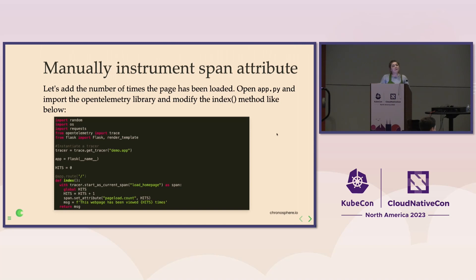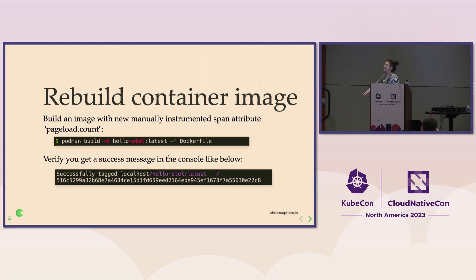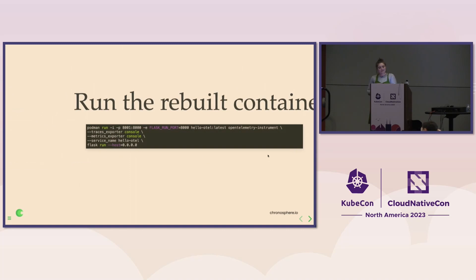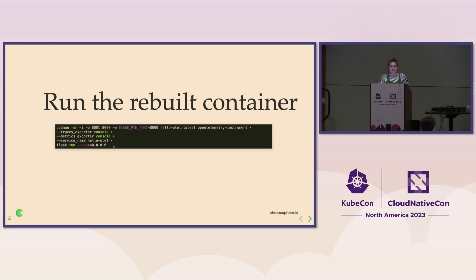We're going to do this loop many times in this workshop: make some code changes, rebuild our container image, load up our app, send some traffic, and look at our trace data. You're welcome to write a little script, or if you've got your Podman VM mounted to your directory you can do this on the fly. Go ahead and rebuild your image — same command as before — make sure you get that success message. Then run our container and copy-paste the run command liberally.